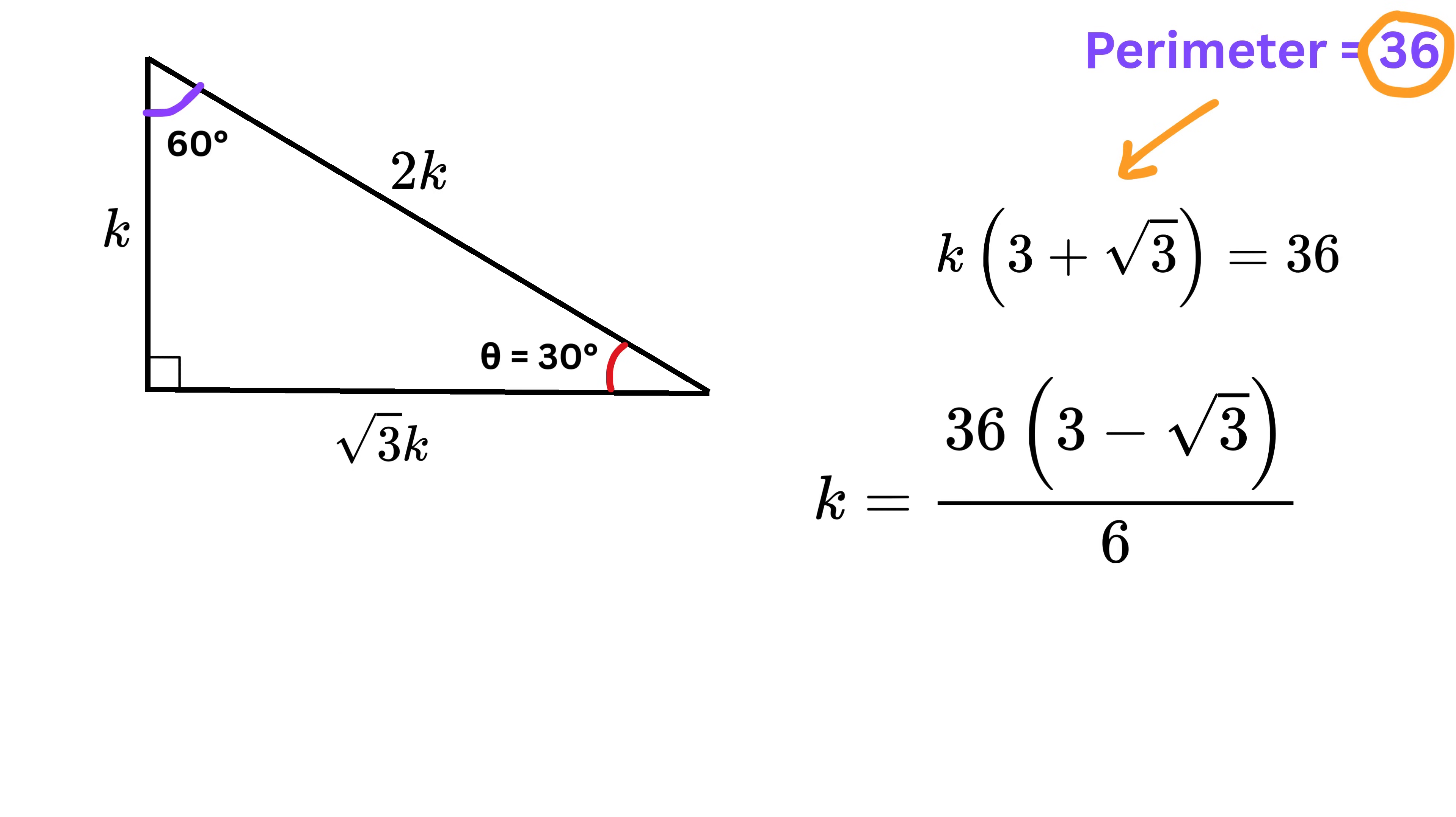Now divide 36 by 6, and we finally get k equals 6 multiplied by 3 minus root 3. Nice!